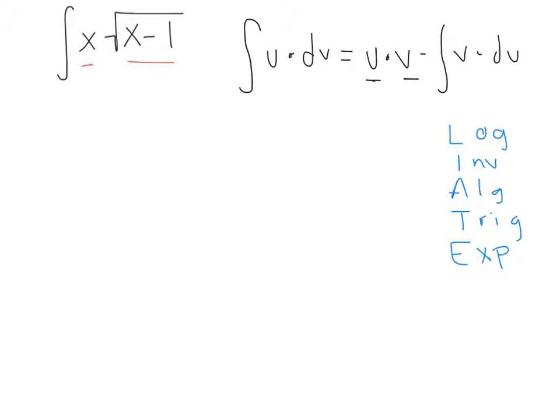And so we can easily decide, based off this ranking system, which one would be first. So we have an x, and we have a radical x minus 1. And so based off LIATE, we can say that x is an algebraic.